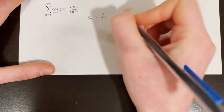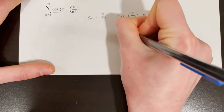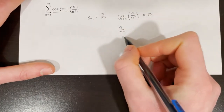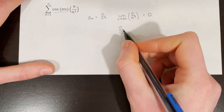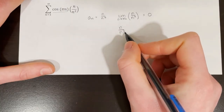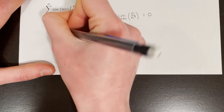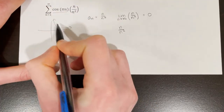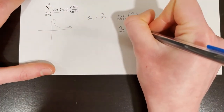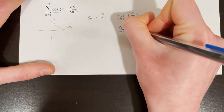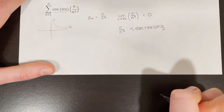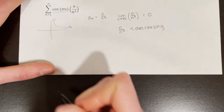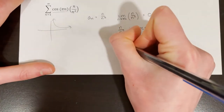We also need to verify that n over n squared is decreasing. Since this simplifies to 1 over n, which always decreases as n grows, we can say n over n squared is decreasing. Both conditions for the alternating series test are met, so the series converges by the alternating series test.